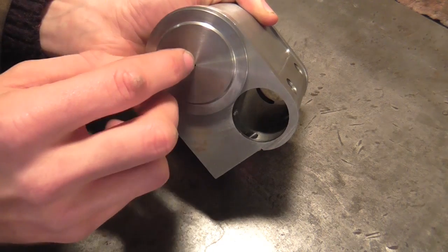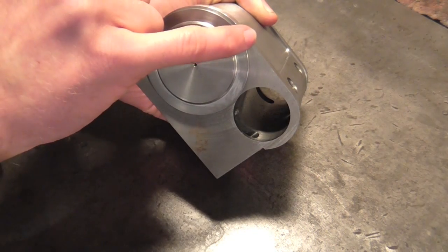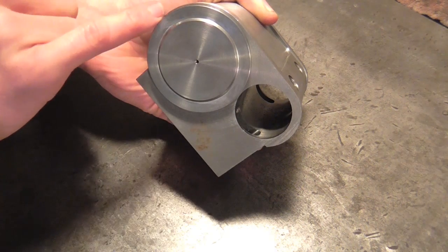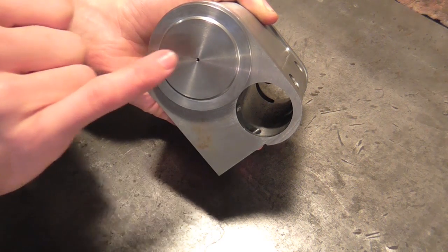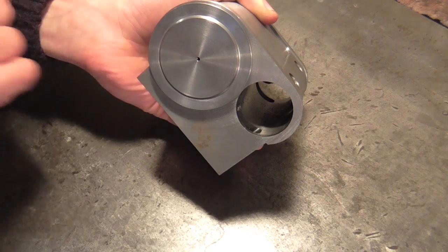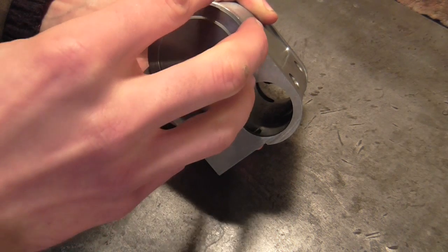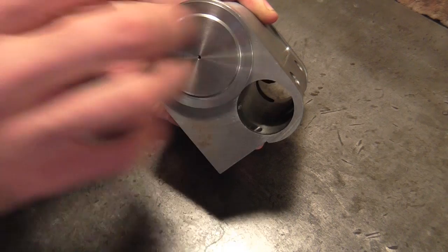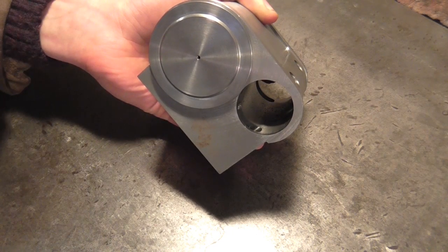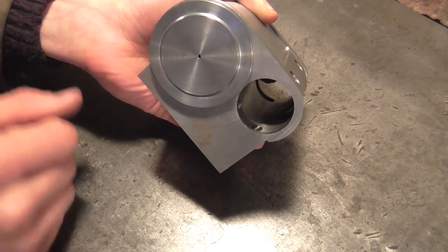A couple of things you might notice about this. One is that the OD is slightly inboard of the edge of the cylinder, and there's a little tapped hole in the middle. That's because there's an aluminum cover that screws on the end of this to make it look nice.